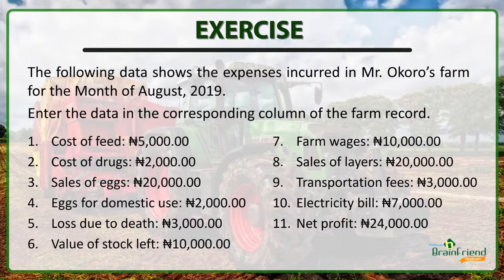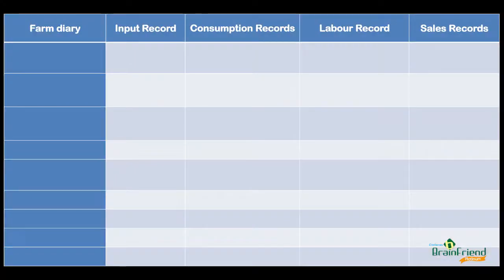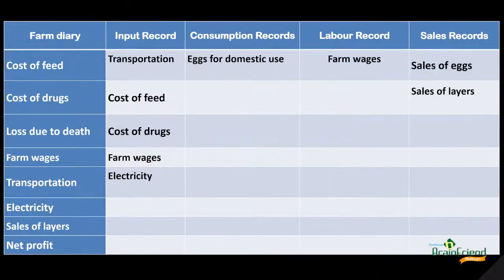Now let us take an exercise that will help us see if we understand which item is best placed under which farm record. The following data shows the expenses incurred in Mr. Okoro's farm for the month of August 2019. Enter the data in the corresponding column of the farm record as shown on your screen. When you're finished, you can show what you've done to your teacher or an older member of your family.